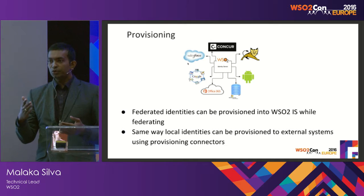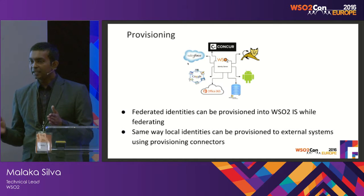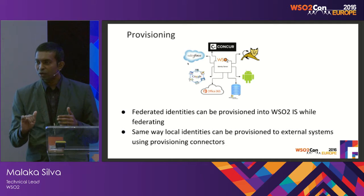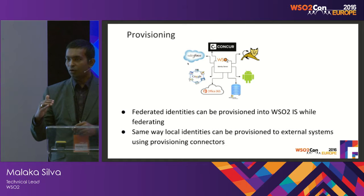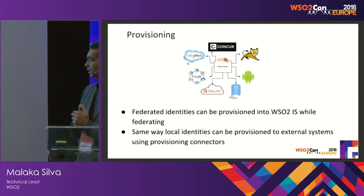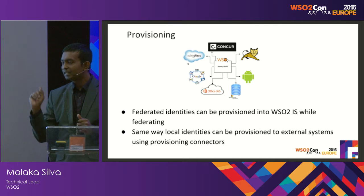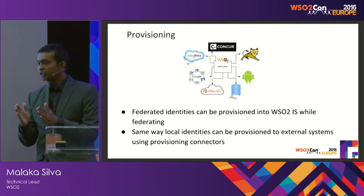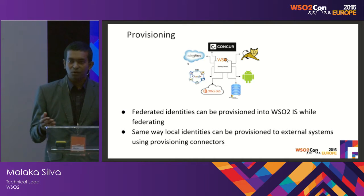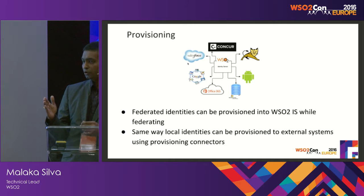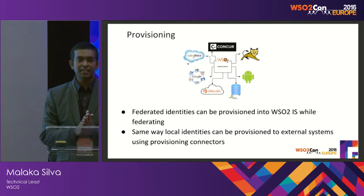Now provisioning: there are two use cases. First, if you use a federated authenticator there is always a requirement to persist users to the local store — what we call shadow accounts — for authorization and profile maintenance. You can enable just-in-time provisioning for federated authenticators and simply persist users by clicking that option. The second use case is provisioning into external systems: you create users in the Identity Server via the admin console, REST API, or SCIM protocol, and if you want to persist the same user to an external system you use provisioning connectors. Currently we have connectors for Salesforce and InWeb, with more on the roadmap.